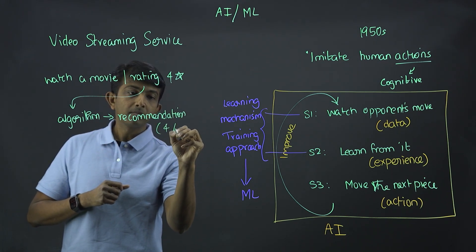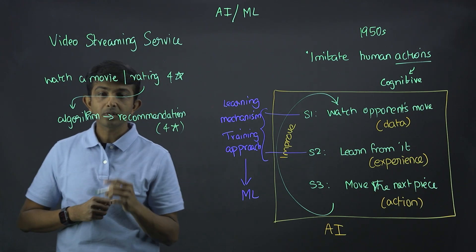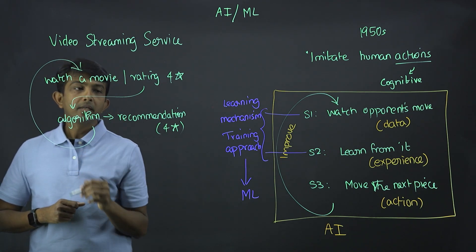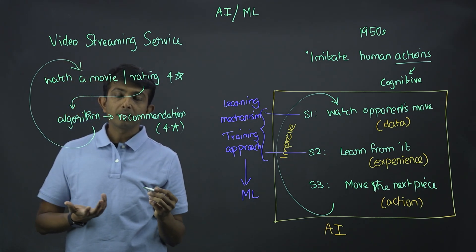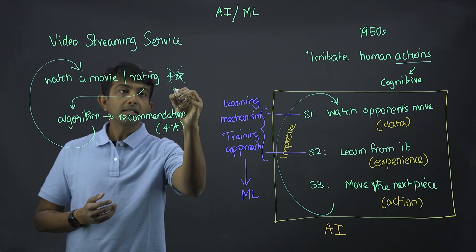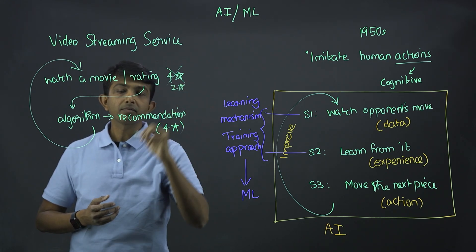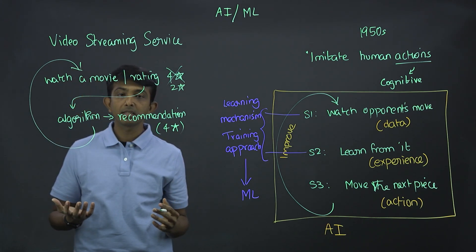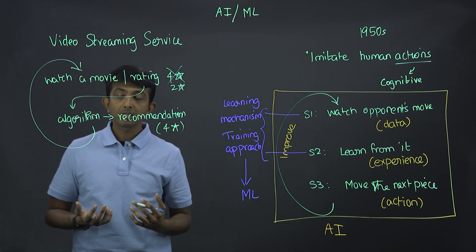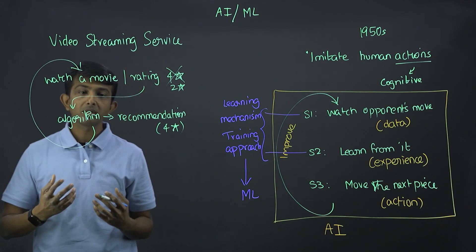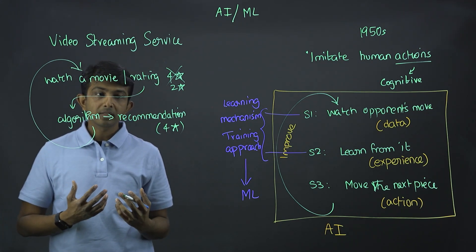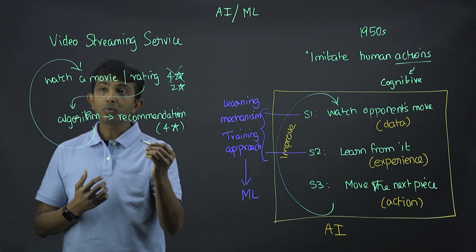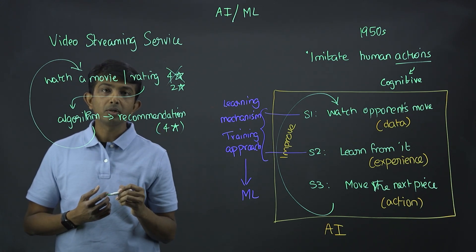And it says, okay, I'm recommending a movie that's going to be four stars, and you're going to like it. Now, this is going to go in a loop. Now, let's say you watch the movie, but you do not like it. And say, I'm going to give you two stars for it. Now, this data goes into the algorithm, which now recognizes that the knowledge that is acquired is now changing. So it has to recognize this and provide a newer recommendation and says, okay, let me adjust myself or improve upon and I'm going to provide a newer recommendation.